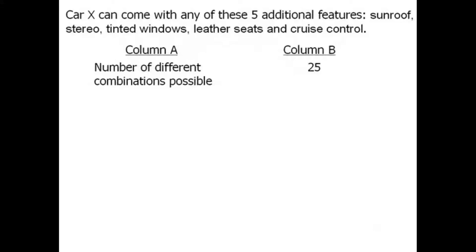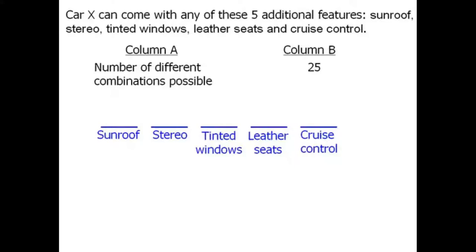Let's break the task of building a vehicle into 5 stages: stage 1 is selecting whether or not we want a sunroof, stage 2 whether or not we want a stereo, and so on. For each stage there are 2 ways — either we have the feature or we don't. The number of ways to build our car is the product of these stages, which equals 32. So column A equals 32, which is greater than column B, and our answer is A.